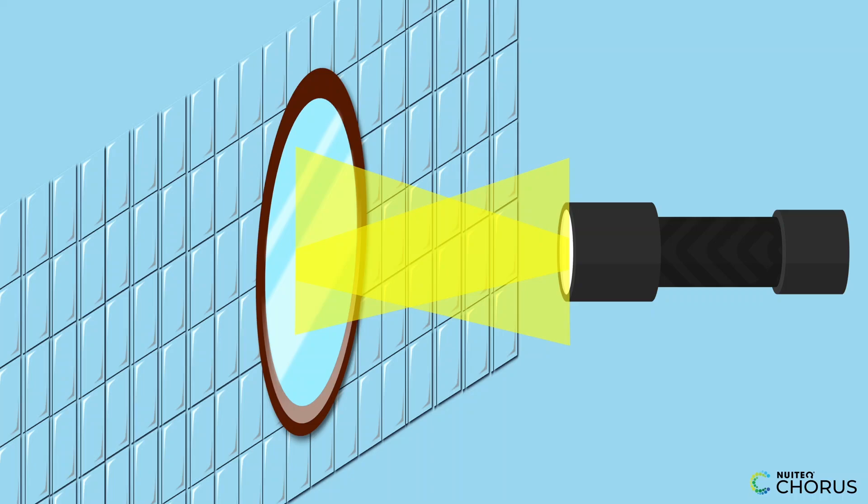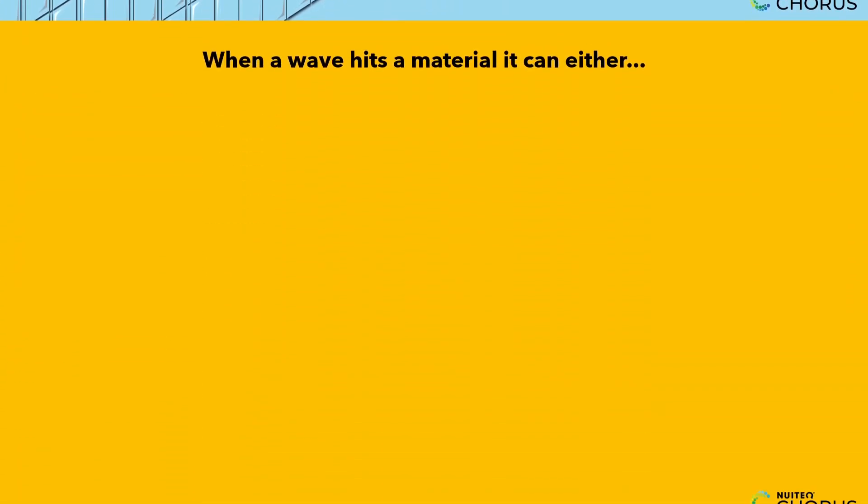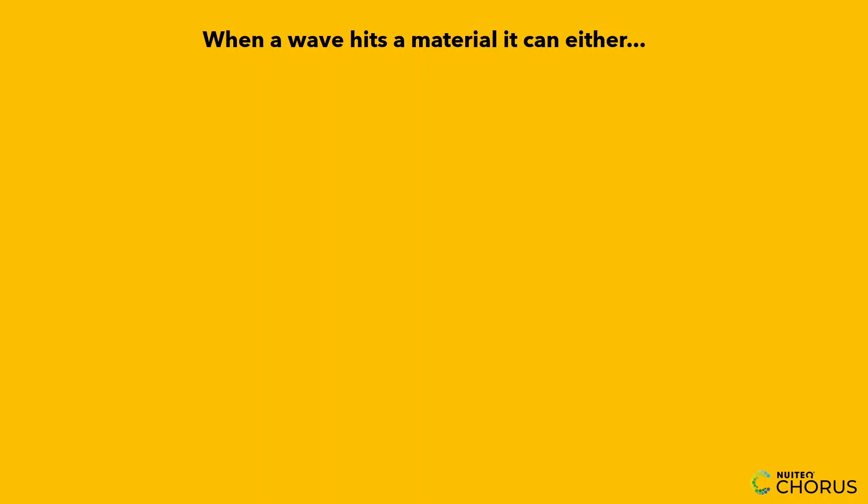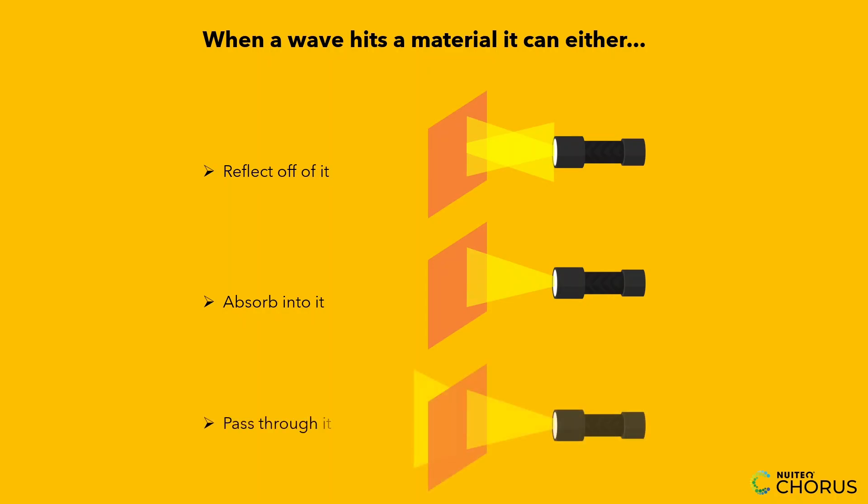This is the concept of wave reflection, absorption, and transmission. When a wave, like light or sound, hits a material, it can do one of three things: reflect off of it, absorb into it, or pass through it.